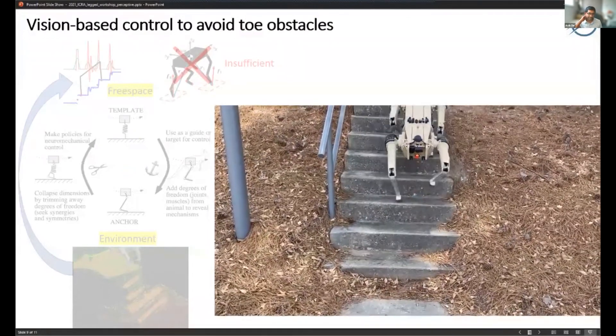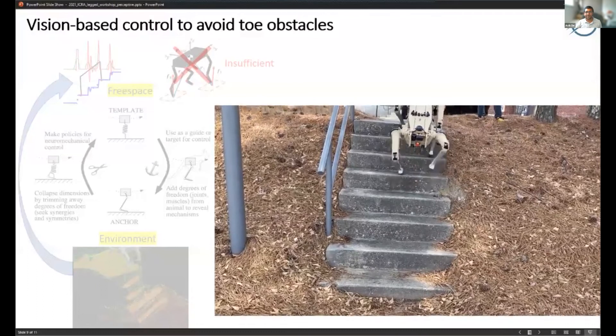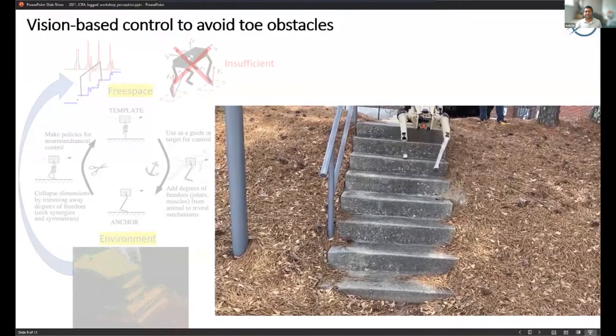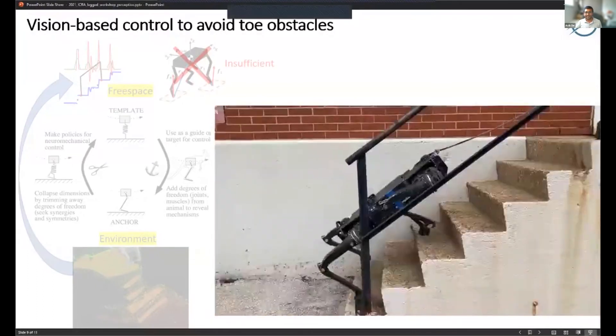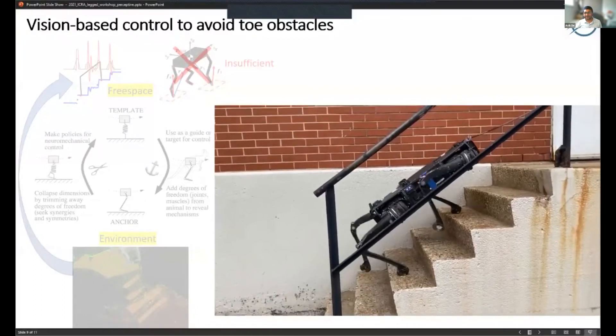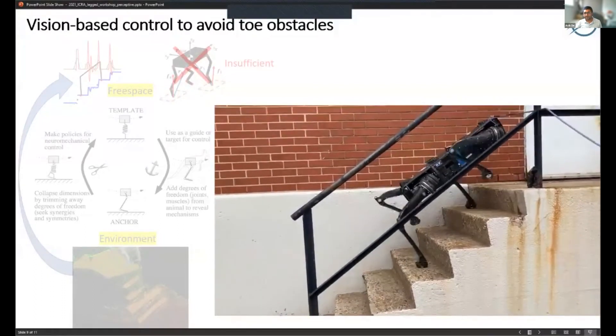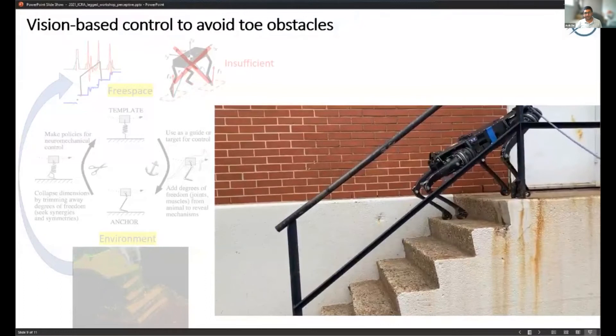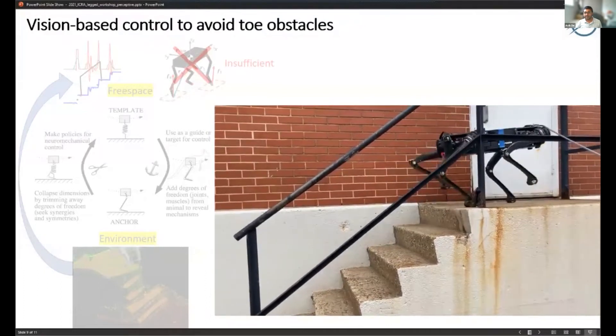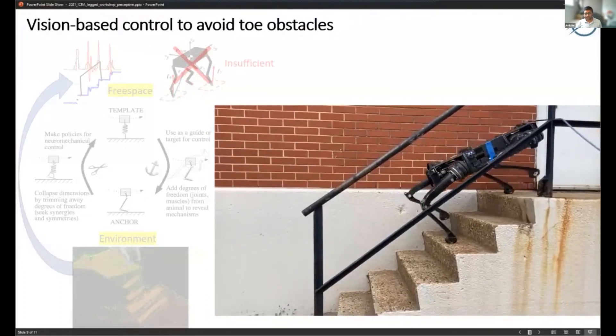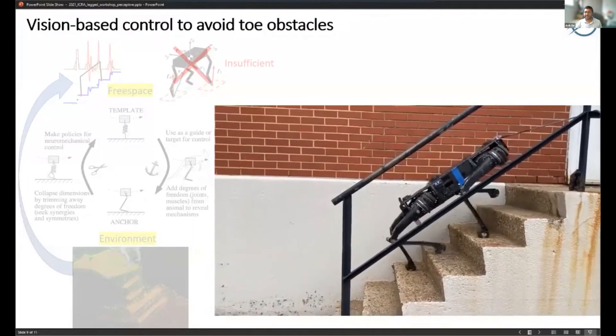The key is selecting a model that is computationally efficient but also has the information about where the configurations of the toes as well as the body are, and using them in a computationally efficient way. We're not 100% sure we have it exactly right at the moment.